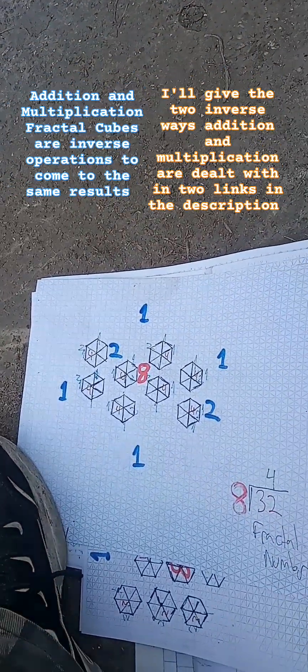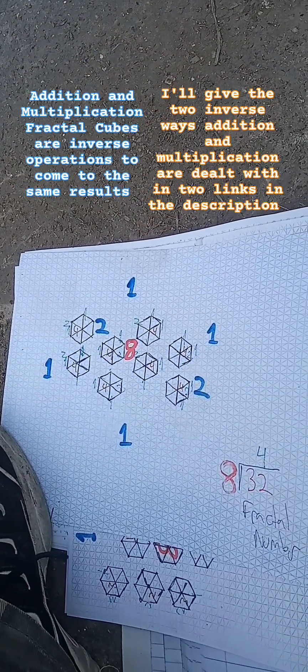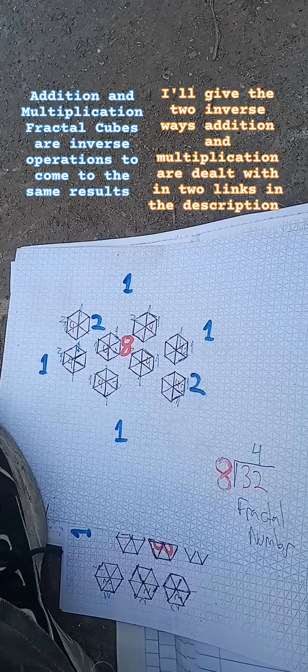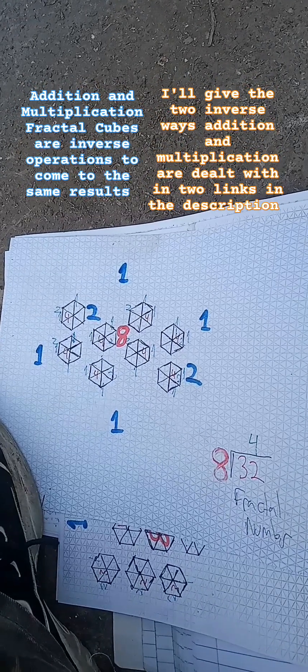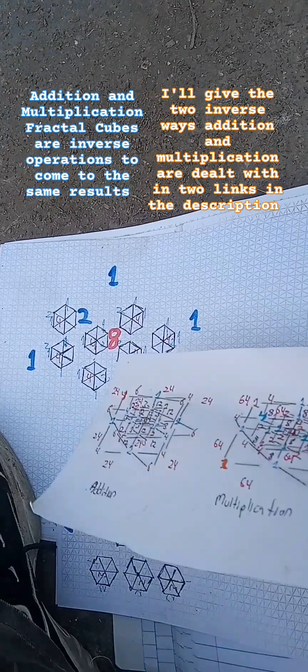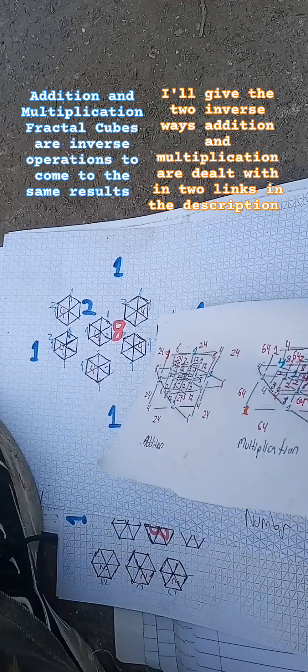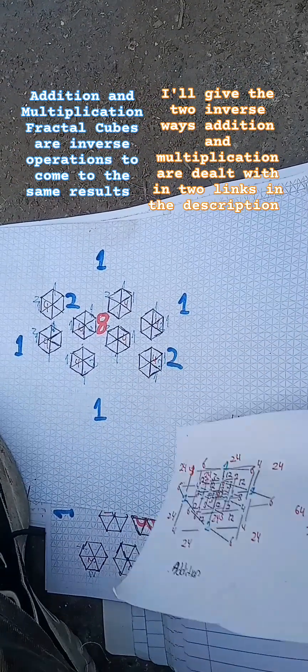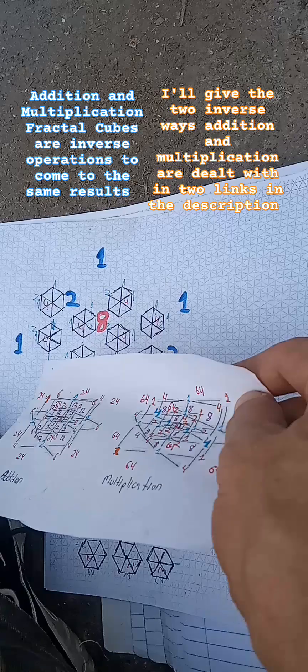In addition, you search for the fractal ghost number central ghost number by adding the micro ghost numbers together and then dividing by 8 to get 4 for the cubed faces.